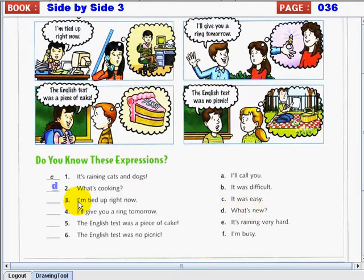Number 3. I'm tied up right now. I'm tied up right now. The answer is F. I'm busy right now.